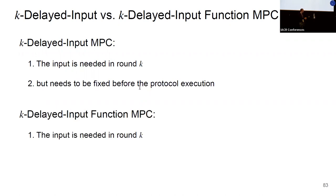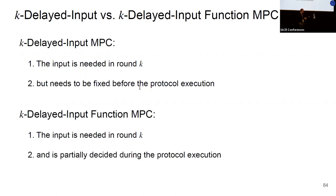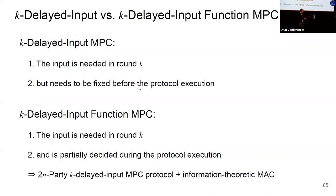Our new notion of k-delayed input function MPC shares the first property: the input is only needed in round k. Additionally, this value can be partially decided during protocol execution — for example, the commitment and one of the random values output afterward. For those values, we do not require privacy, only that they are properly used inside the MPC protocol. In the paper, we show how to realize this notion using a general 2n-party k-delayed input MPC protocol together with an information-theoretic MAC to obtain an n-party k-delayed input function MPC protocol.